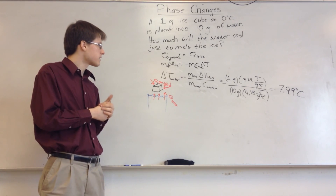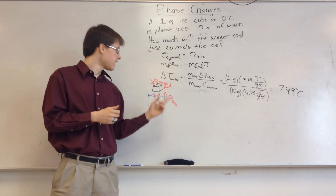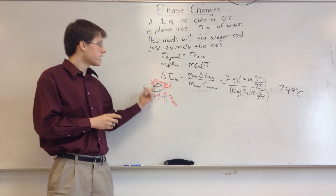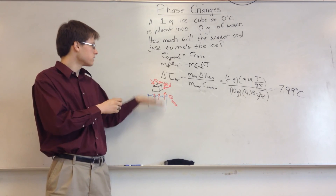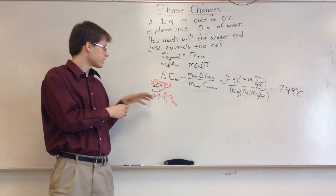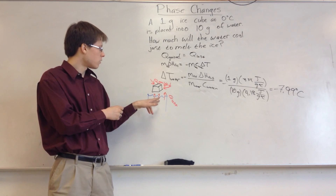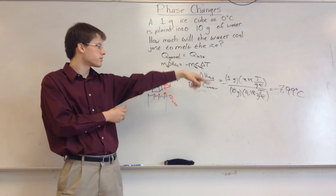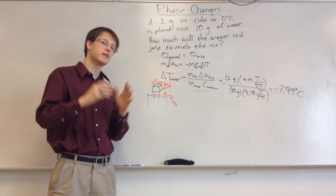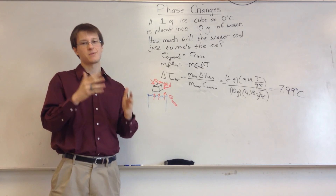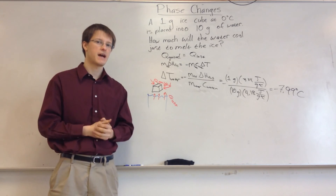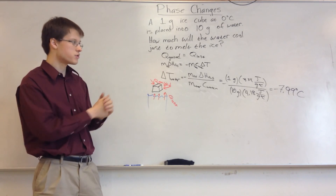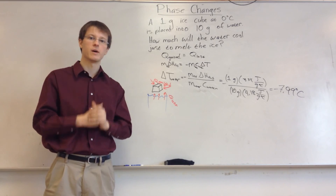This could get more complicated — you could then be asked to find the equilibrium temperature after all the ice melts. You'd have liquid water at zero degrees Celsius from the melted ice, and the remaining water at a cooled temperature — say 12 degrees Celsius — and then use Q equals MC delta T, set the two equal, and solve for the change in temperature. That's a bit more work, but this demonstrates how to handle just the melting step and the cooling of the water.